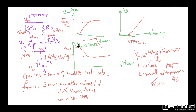Looking at the plots of Vout1 and Vout2: Vout1 equals Vdd minus (ISS/2) × Rd, so it depends on Id while Vdd and Rd are fixed. When all transistors are in saturation, Vout is fixed. When M1 and M2 were in cutoff, Vout was at Vdd supply level.